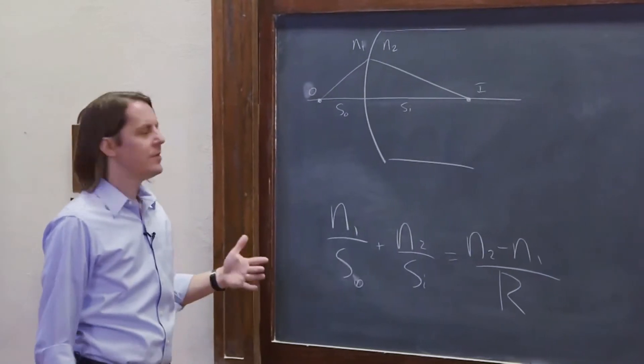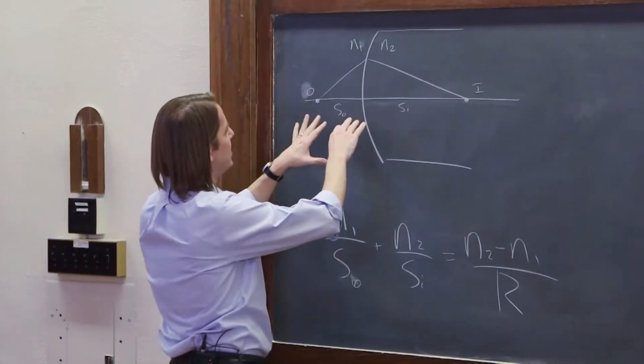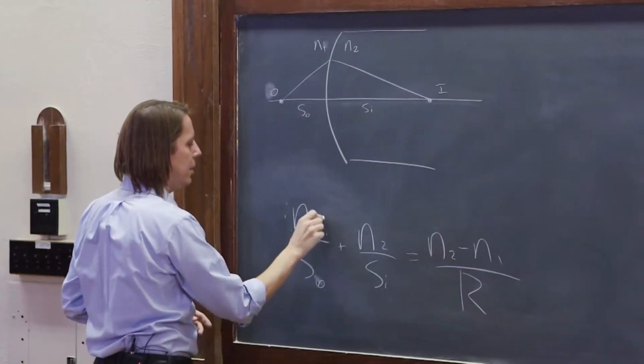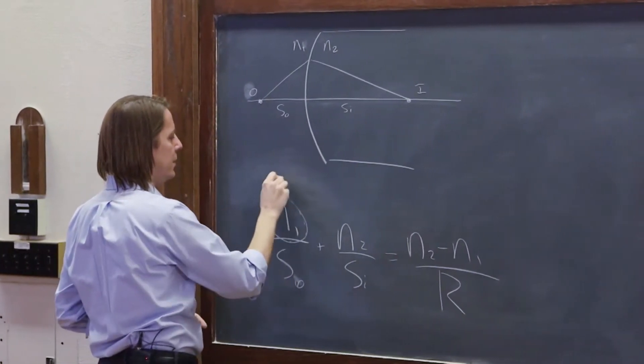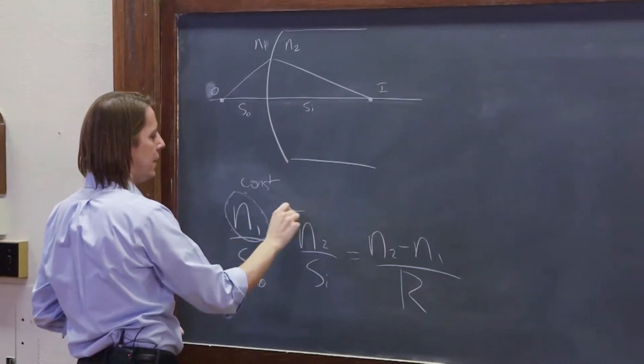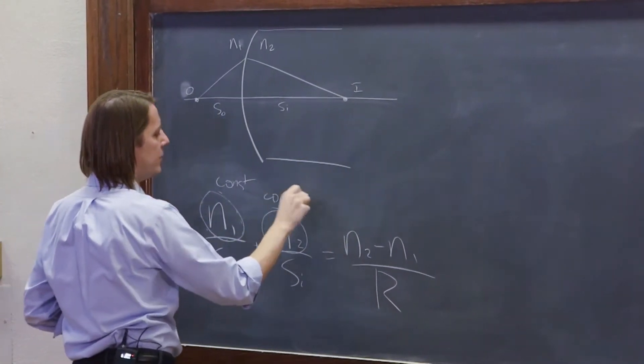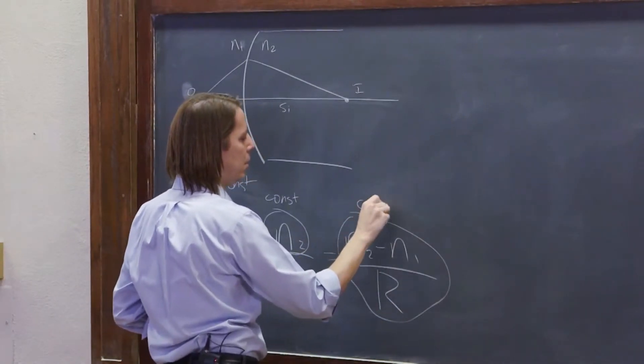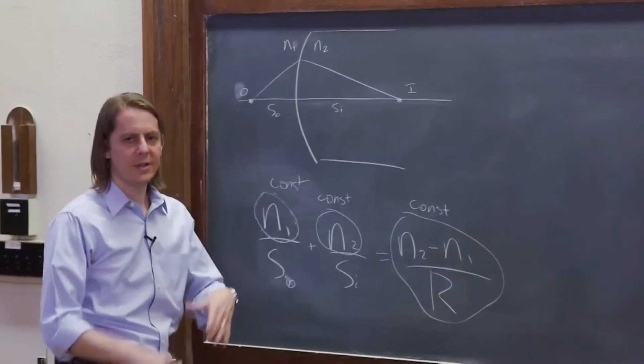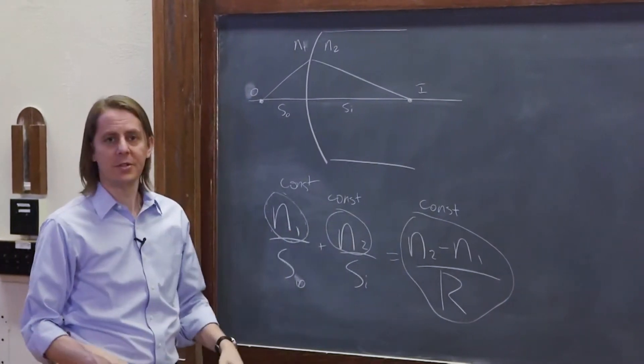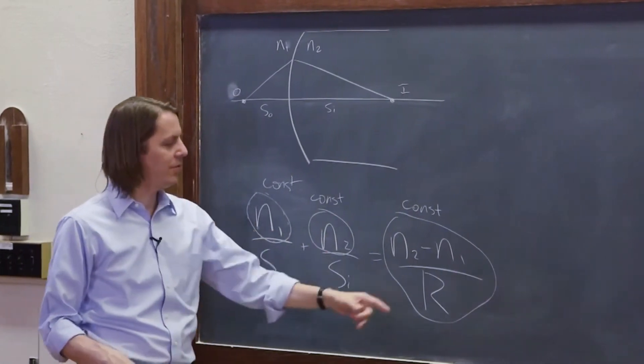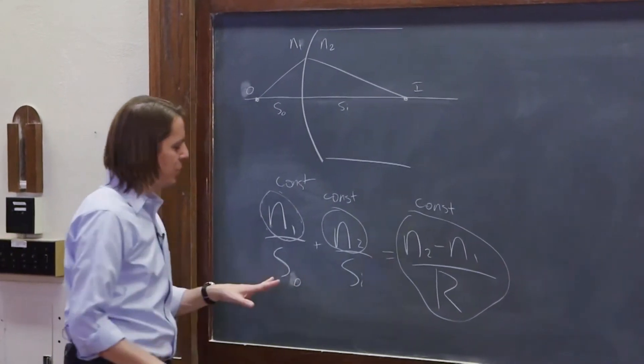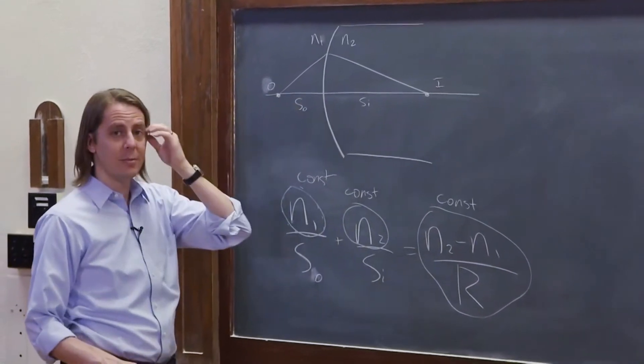So this tells us basically the relationship between the object distance and the image distance. Because if you think about it, this is a constant, and N2 is a constant, and this whole thing is a constant. If I just have a sphere of glass, none of those are going to change. N1, N2, and the radius is however big the sphere is. So this just shows you the relationship between the object distance and the image distance.